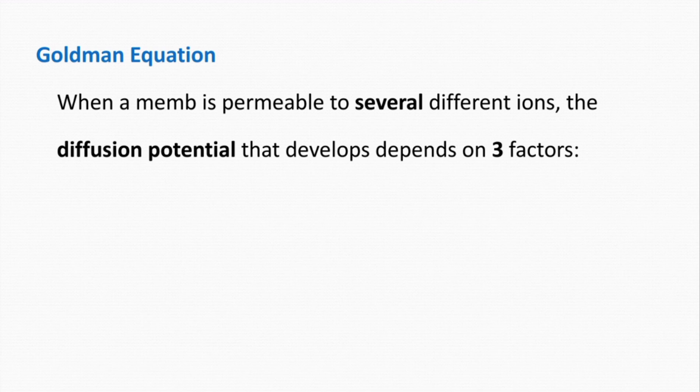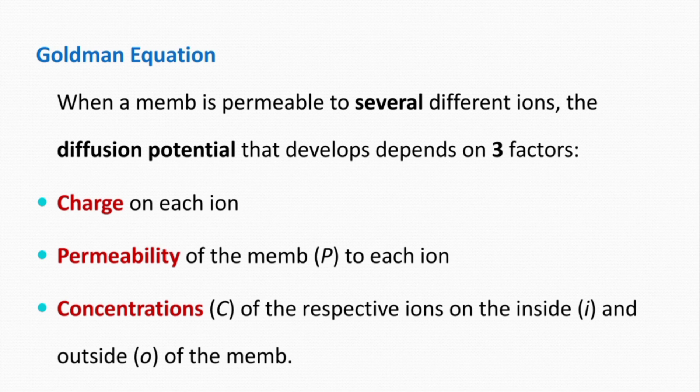Now, briefly about the Goldman equation. In the previous examples we discussed a membrane permeable to only one ion at a time, but in the body a membrane is permeable to several different ions simultaneously. When a membrane is permeable to several ions, the diffusion potential depends on three factors: the charge of each penetrating ion, the permeability of the membrane to each ion, and the concentrations of the respective ions on the inside and outside.